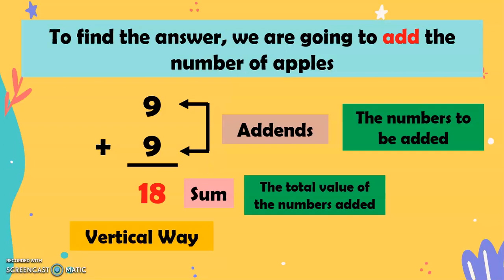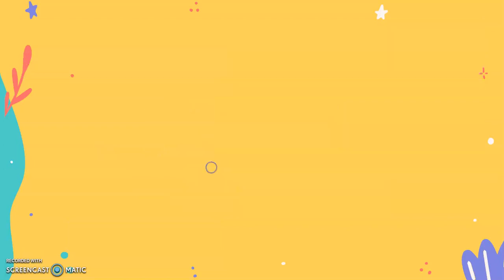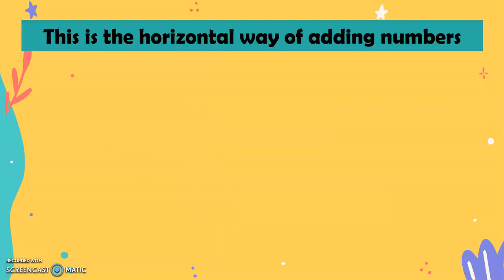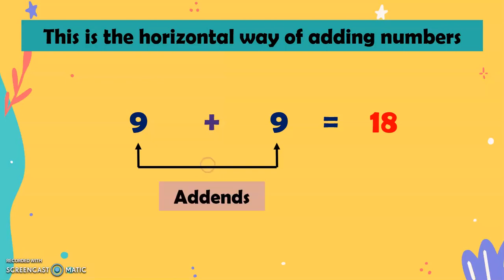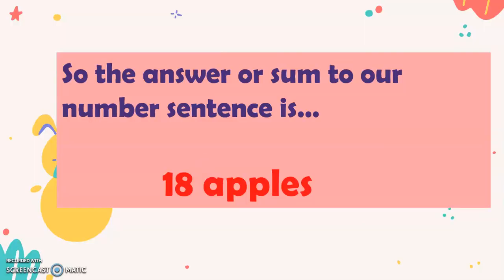And this is the vertical way of doing addition. Now, this is the horizontal way of adding numbers. So again, we have 9 plus 9 equals 18. And again, we have here the addends and of course, the sum. So the answer or sum to our number sentence is 18 apples.